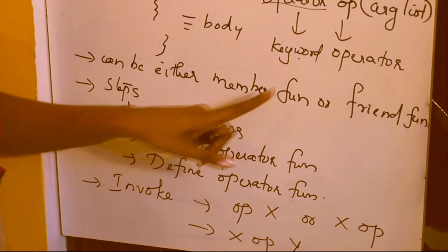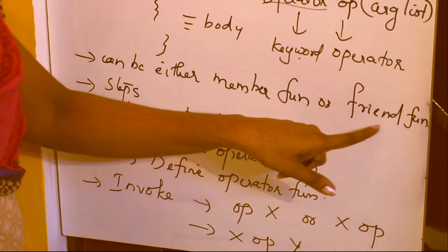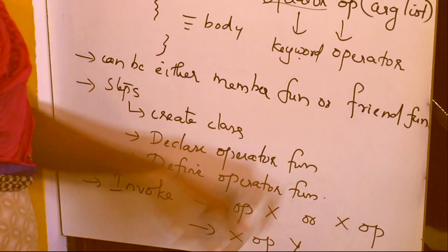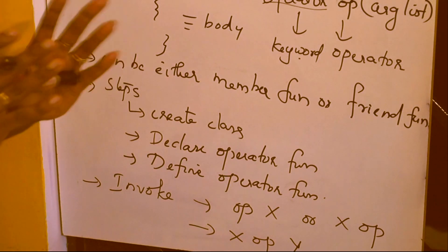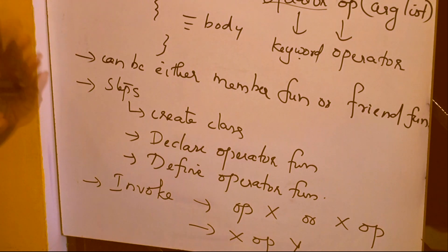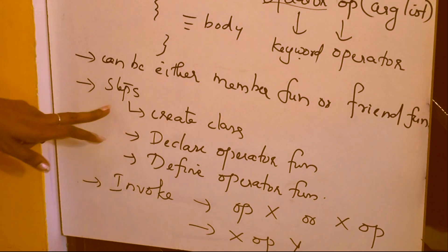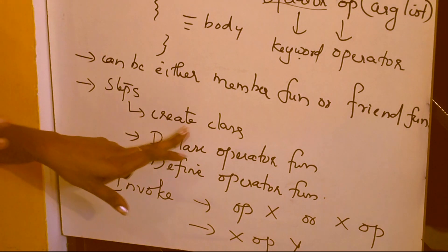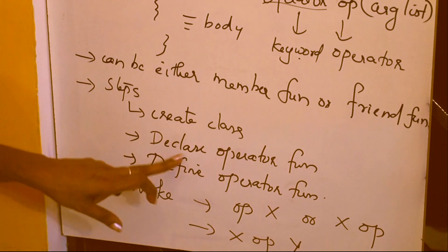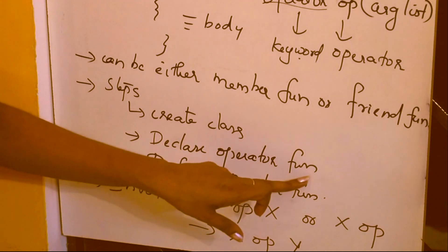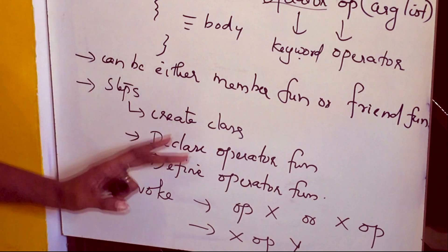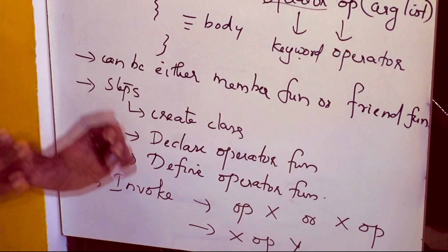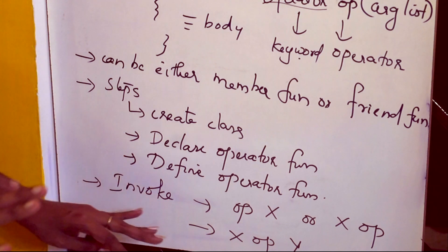This function can be either a member function of the class or a friend function. In general, the main steps to implement operator overloading are: first, create a class; then, declare the operator function; then, define the operator function.